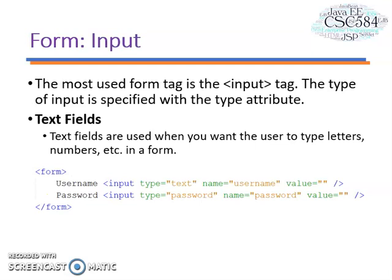HTML uses input tags frequently to process input from forms. So the type of input is specified with the type attribute. For example, we use text fields when you want the user to type letters, numbers in form.